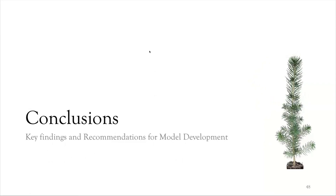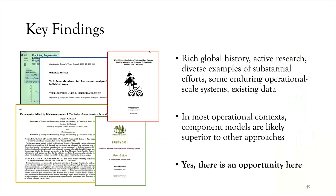Now some conclusions and key findings. There is a rich global history of regeneration modeling with active research and diverse examples at operational scale like POTATA and the Prognosis model. Existing datasets in Alberta would be suitable for modeling some or all components. In most operational contexts, component models are likely superior to other approaches like imputation and mechanistic models. My conclusion is that yes, there is an opportunity in Alberta to develop regeneration models with existing datasets.